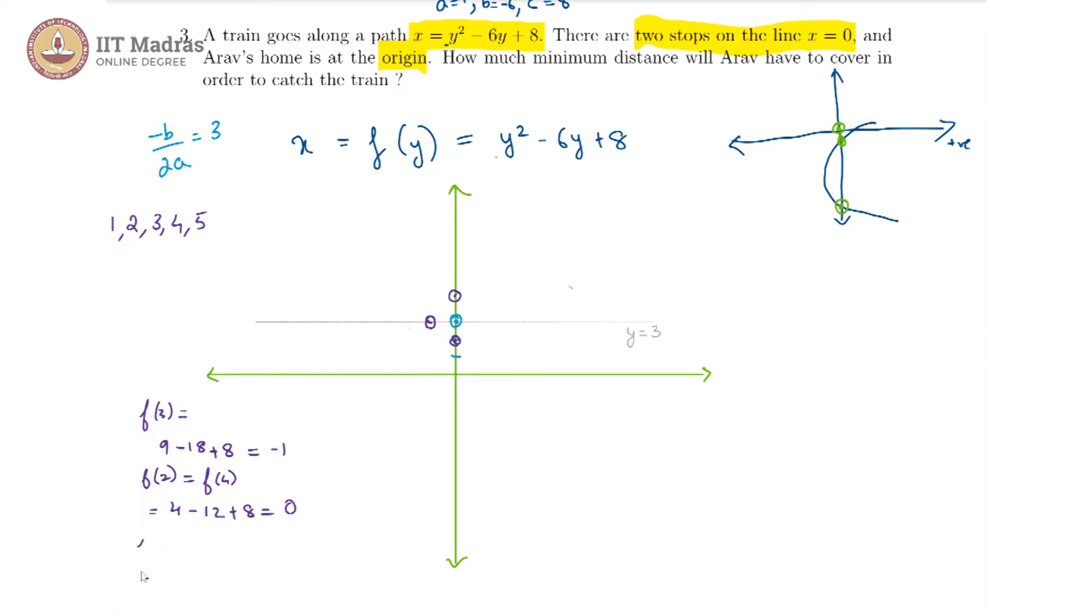If you want we can further look at what is f of 1 which is also equal to f of 5 and that is going to give us 1 minus 6 plus 8 which is 3.